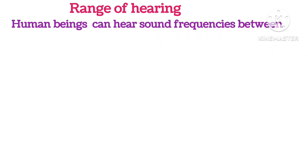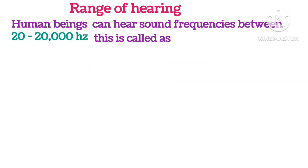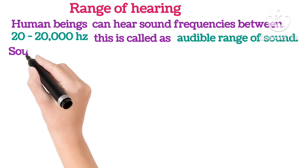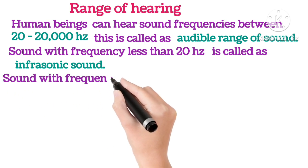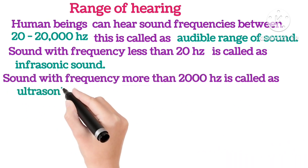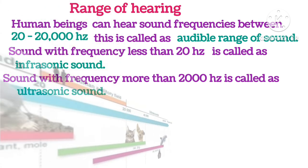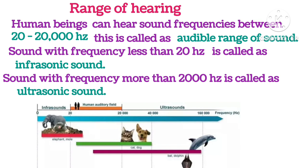Range of hearing: Human beings can hear sound frequencies between 20 to 20,000 Hz — this is called the audible range of sound. Sound with frequency less than 20 Hz is called infrasonic sound, and sound with frequency more than 20,000 Hz is called ultrasonic sound. As you can see in the picture, humans fall into the auditory field. Elephants and moles hear infrasonic sound; cats and dogs hear ultrasonic sound; and dolphins and bats can hear even higher frequencies.